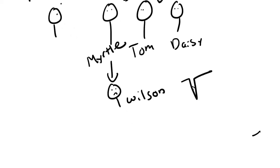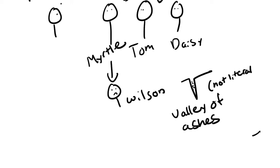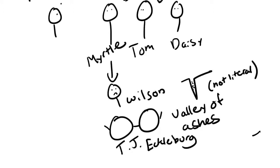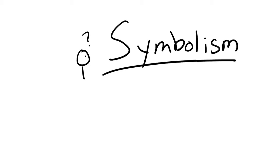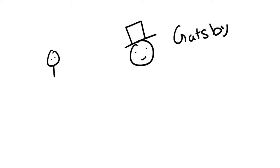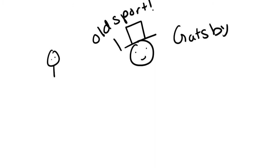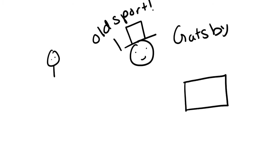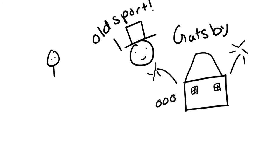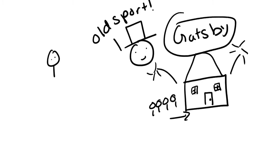At the same time, we're introduced to a few other important symbols: the Valley of Ashes and the giant glasses of T.J. Eckleburg. What does it all come down to? One word — symbolism. We'll get to those symbols later, but first we're introduced to Gatsby, who is extremely wealthy and constantly holds house parties.